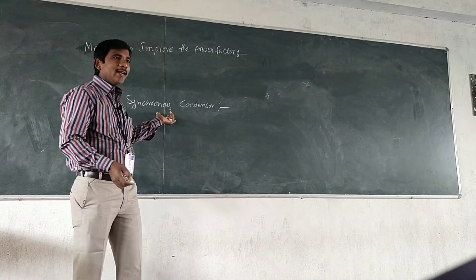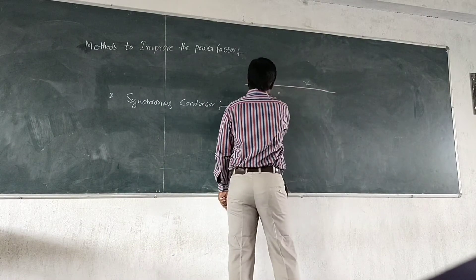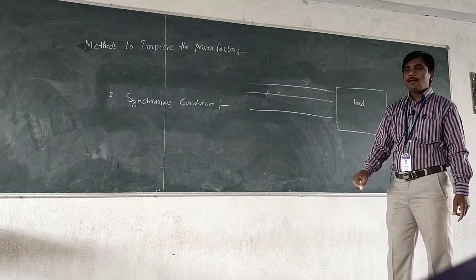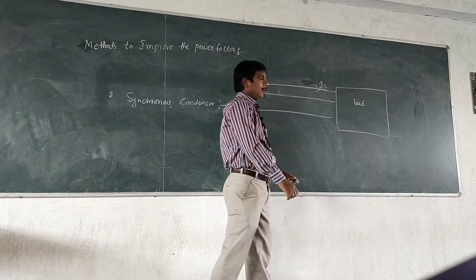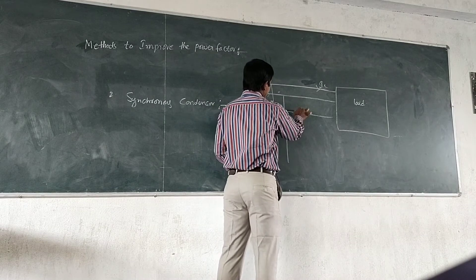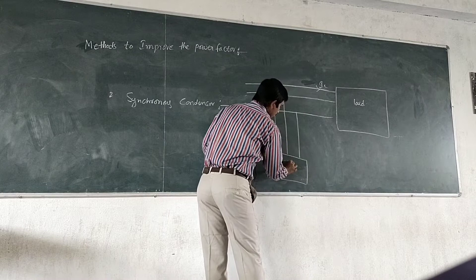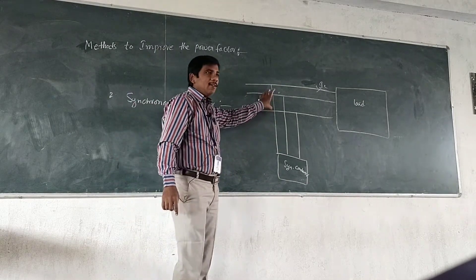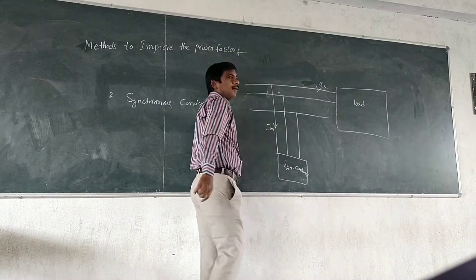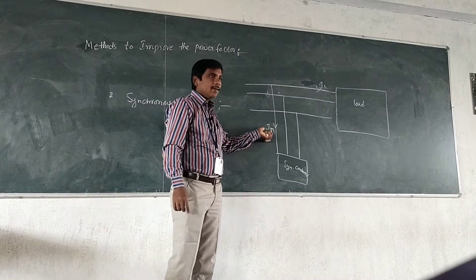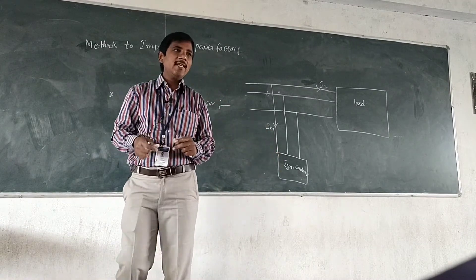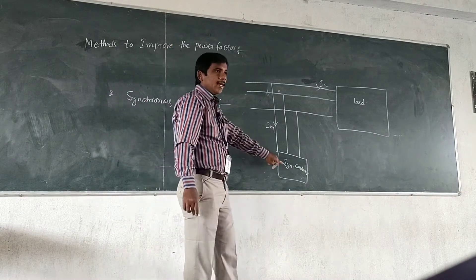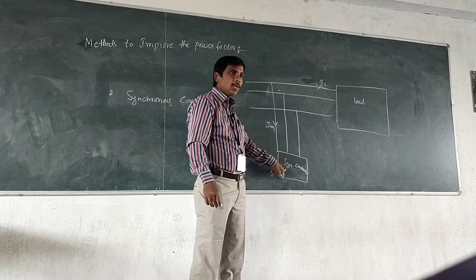If you connect a synchronous condenser in parallel with the source, and it is connected to a load taking lagging current — this is the load current taken by the load. A synchronous condenser is connected in parallel with the source. A synchronous condenser can be excited by giving field excitation. If you increase the field excitation, it is over-excited — meaning the field current has to be increased.